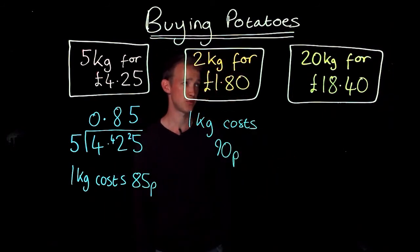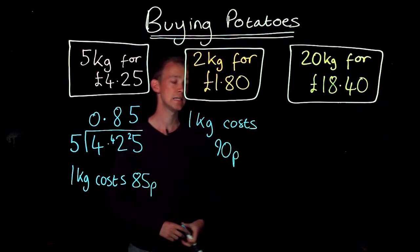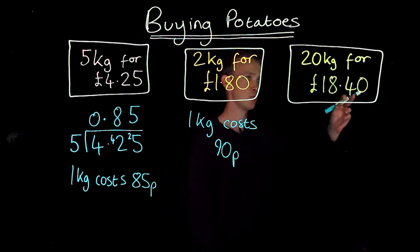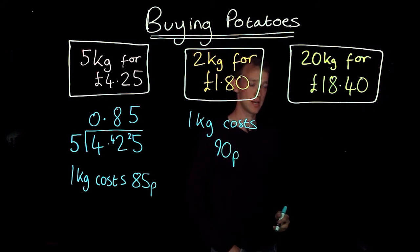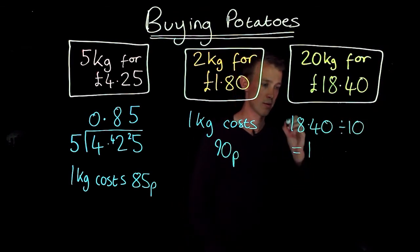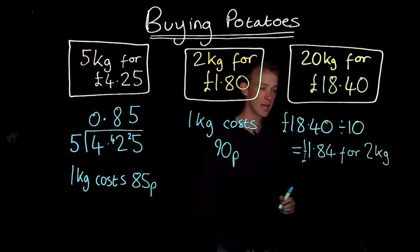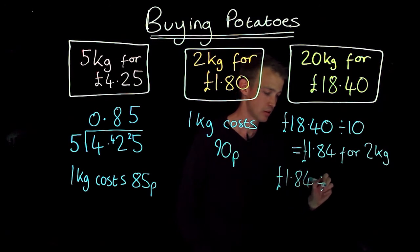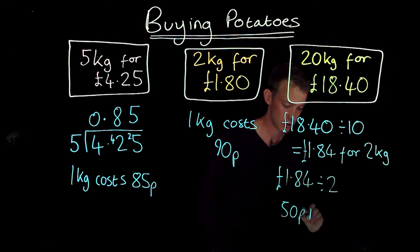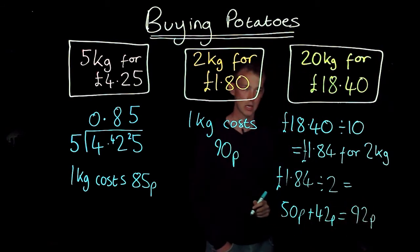And finally, 20 kilograms for £18.40. I could use the bus stop method here, but looking at the number it's probably easier to use another method. 10 times 2 makes 20, so I can divide by 10 and then divide by 2 to find out what 1 kilogram is. Dividing by 10 first gives me £1.84, and that's for 2 kilograms. Then for 1 kilogram I'll divide by 2. Half of £1.84 gives me 92 pence for 1 kilogram.